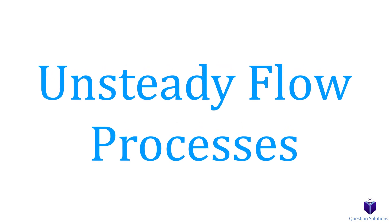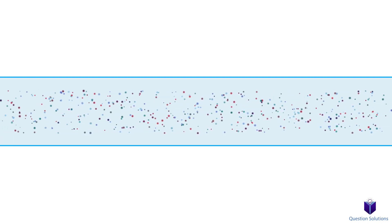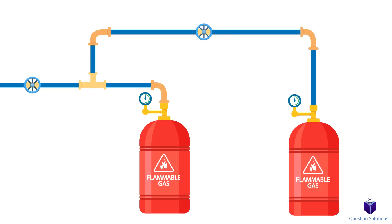Up until now, we talked about steady flow devices, meaning everything pretty much flows at the same rate, so it's easy to do calculations. Now we're going to look at unsteady flow systems. In this case, we have to account for the changes within a control volume.